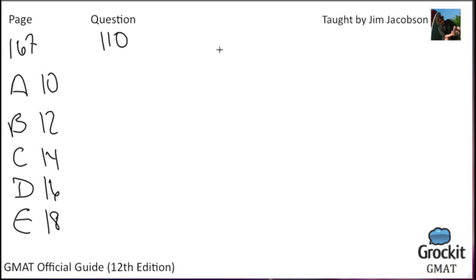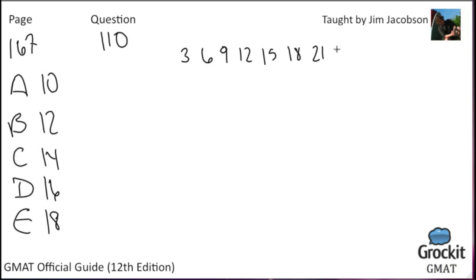We're trying to figure out the largest power of 3 that's still a factor of the whole product. We only need to find numbers from 1 to 30 that are divisible by 3. The multiples of 3 between 1 and 30 are: 3, 6, 9, 12, 15, 18, 21, 24, 27, and 30. That's 10 numbers (30 divided by 3 equals 10). We just need to count how many times 3 appears in each of these.